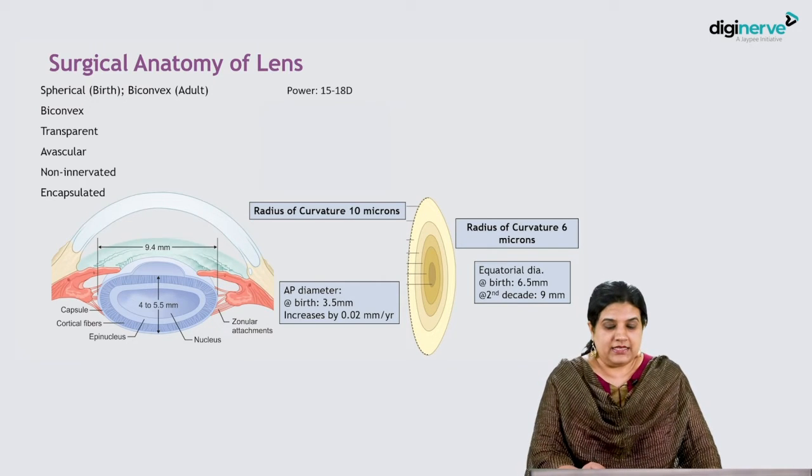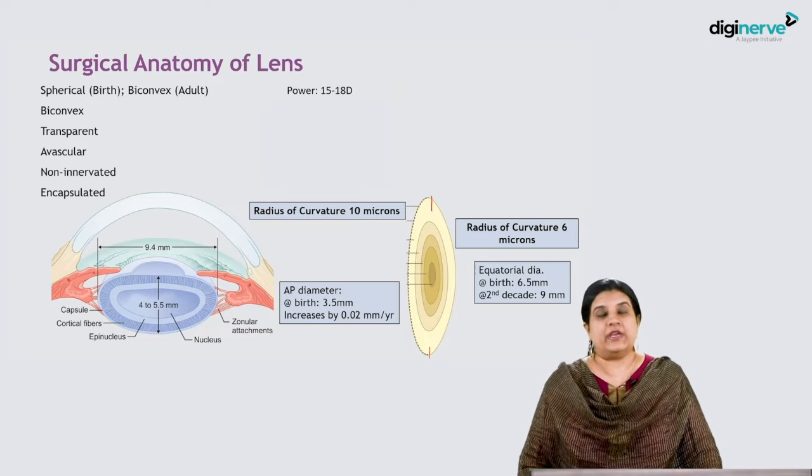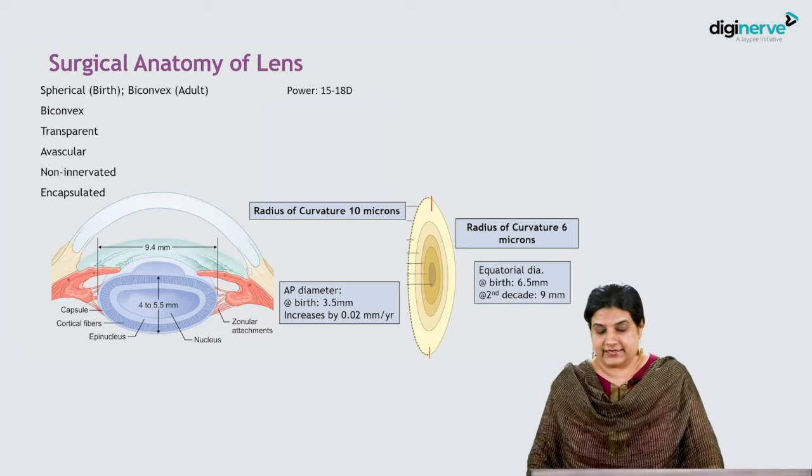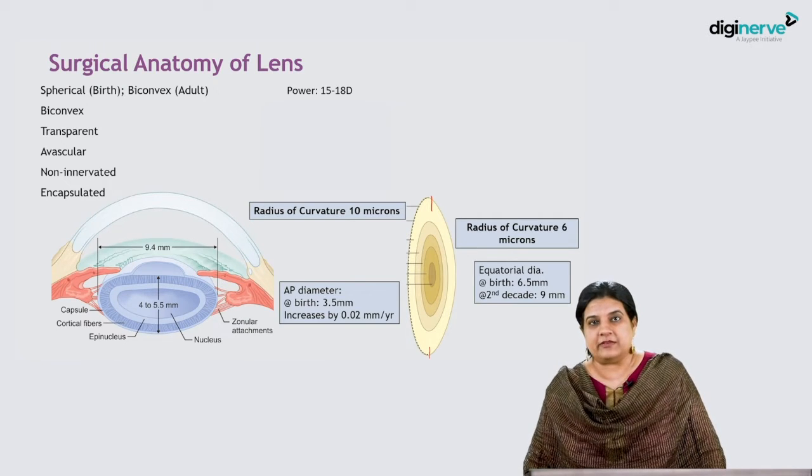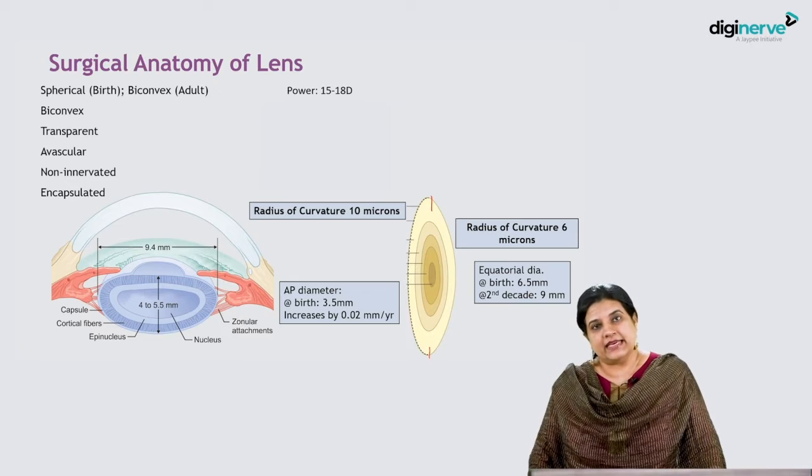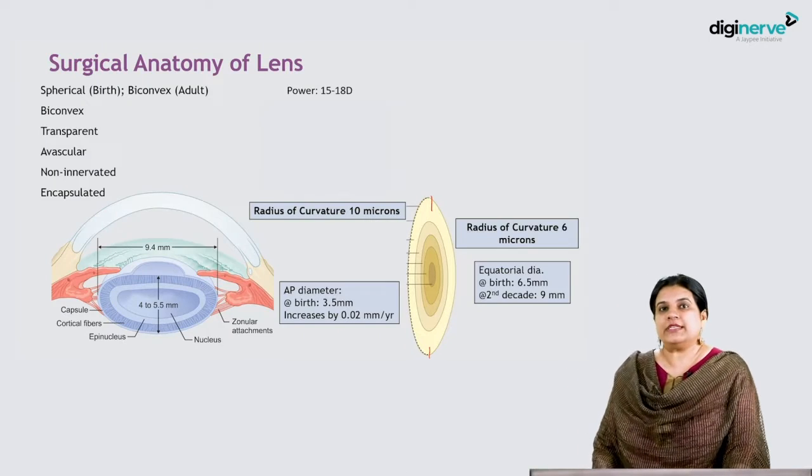Right in the center where the anterior and posterior poles meet, we have the equator of the lens. The equatorial diameter at birth is about 6.5 millimeters, and by the second decade it is about 9 millimeters.